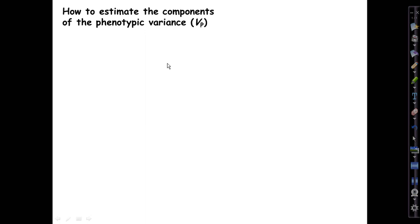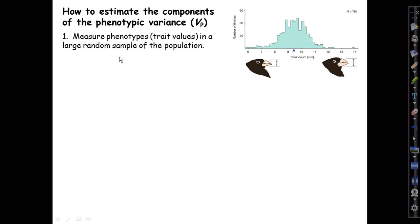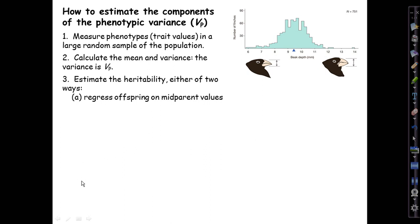How do we estimate in real life the components of the phenotypic variance? Start by measuring phenotypes—the trait values—in some large random sample of the population, like these beak depth measurements for Darwin's finches. Then estimate the heritability by regressing offspring on mid-parent values, or by measuring the response to selection, for example by having a drought.